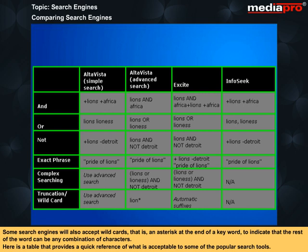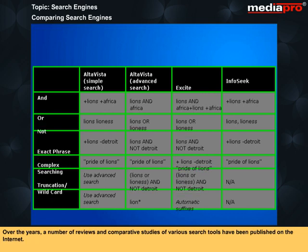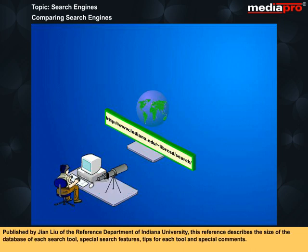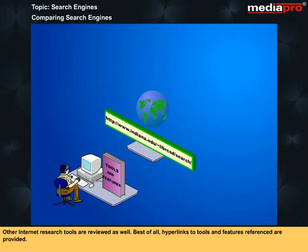Here is a table that provides a quick reference of what is acceptable to some of the popular search tools. Over the years, a number of reviews and comparative studies of various search tools have been published on the internet. If you are interested in a one-stop comparison of the features of different search tools, try this webpage. Published by Jayang Liu of the Reference Department of Indiana University, this reference describes the size of the database of each search tool, special search features, tips for each tool and special comments. Other internet research tools are reviewed as well. Best of all, hyperlinks to tools and features referenced are provided.